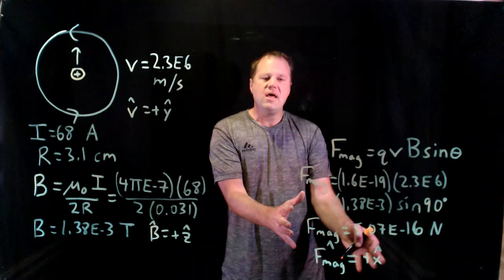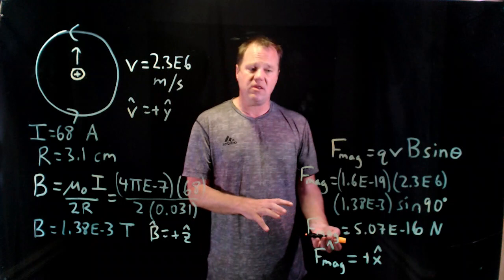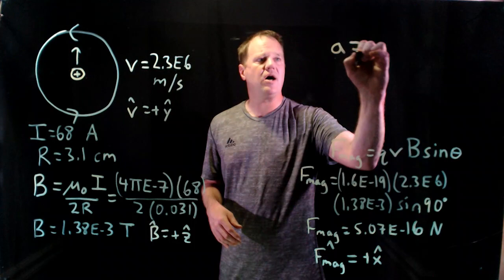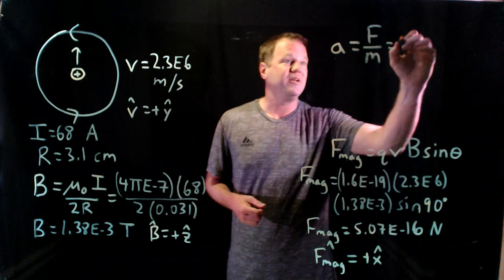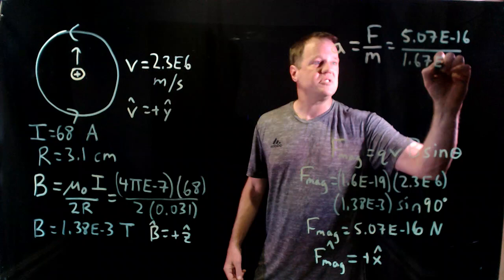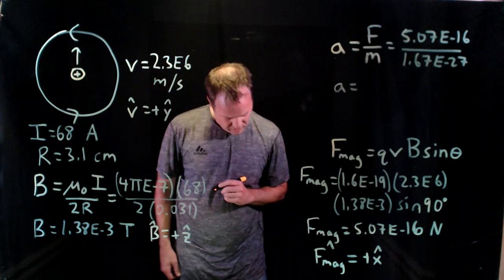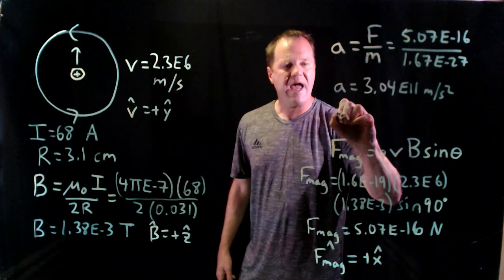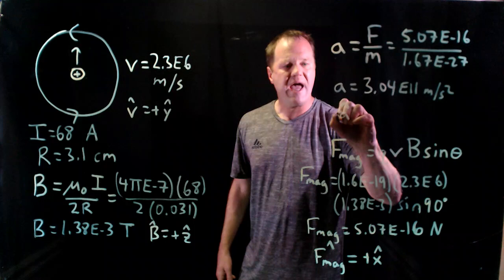I've got the magnetic force completely described. Now we can calculate the acceleration of the proton assuming that this is the only force. Let's use Newton's second law. Net force divided by mass gives us the acceleration. This is the only force. We just chuck it in. Normally there's a summation here but not in this case. Nothing to add up. 5.07 times 10 to the minus 16. And I divide by the mass of a proton, 1.67 times 10 to the minus 27 kilograms. The proton will have an acceleration of 3.04 times 10 to the 11 meters per second squared. The acceleration has to be in the same direction as the force in the plus x direction.